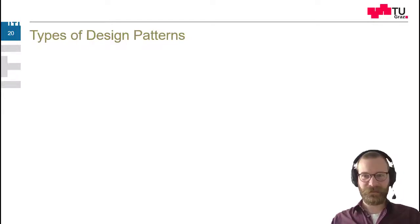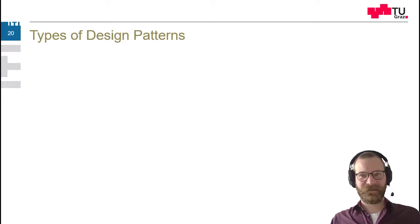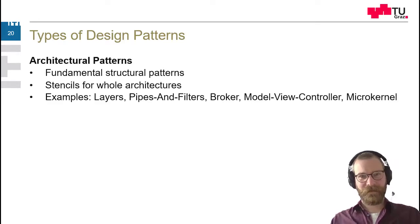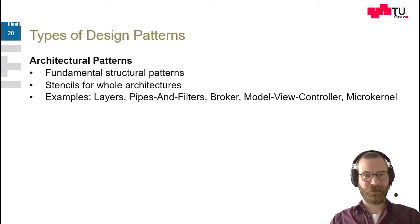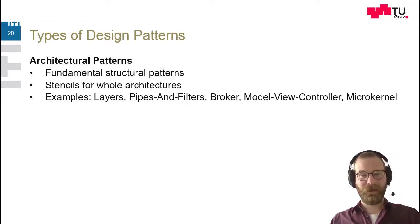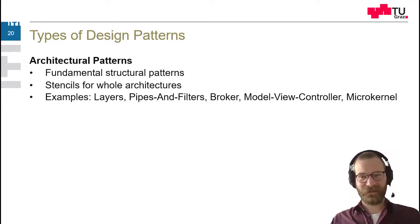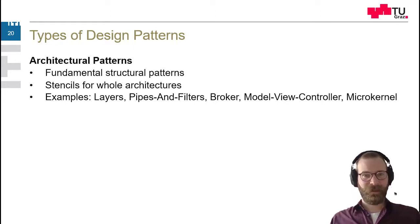There are some different types of design patterns. Of course, this grouping of types is a little bit artificial, but it boils down to what are very big patterns, which have a huge impact on your whole software architecture. For example, the layers pattern, the broker pattern, or model-view-controller. Because using these patterns, you have to completely design your whole application around this architecture.